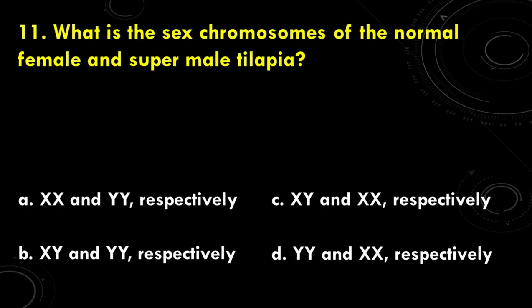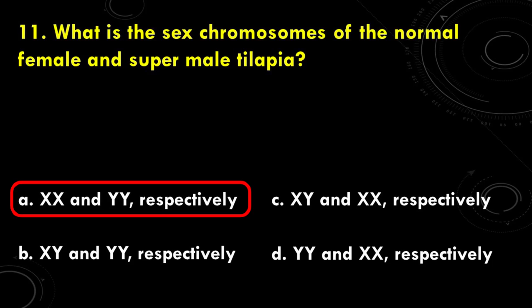For the 11th question: what is the sex chromosomes of the normal female and super-male tilapia? The options are: A. XX and YY respectively, B. XY and YY respectively, C. XY and XX respectively, and D. YY and XX respectively. The correct answer is A, XX and YY respectively. This graph shows the development of YY-line males.